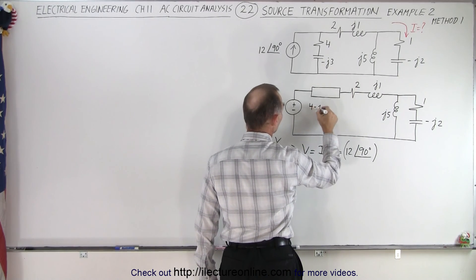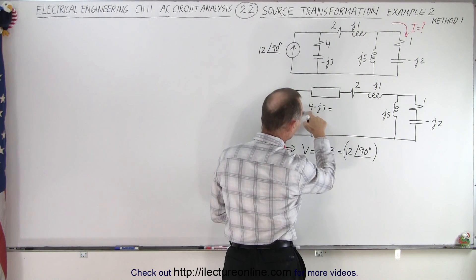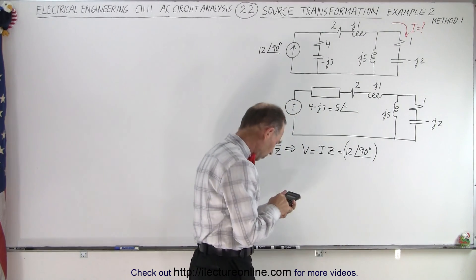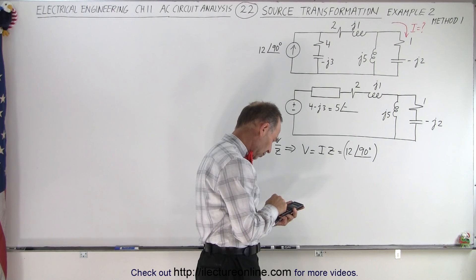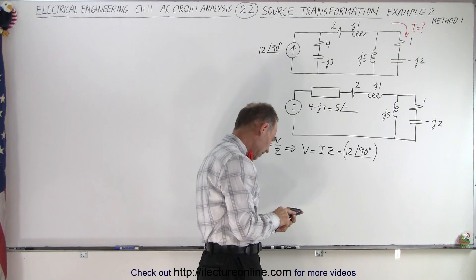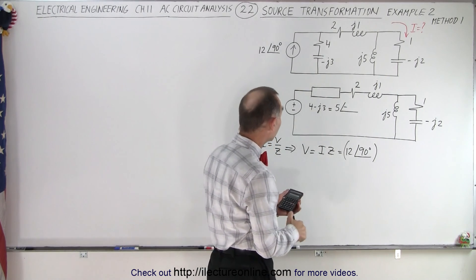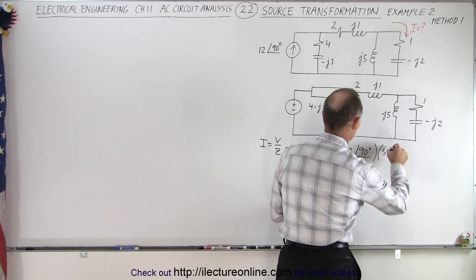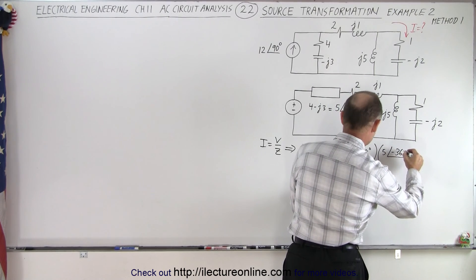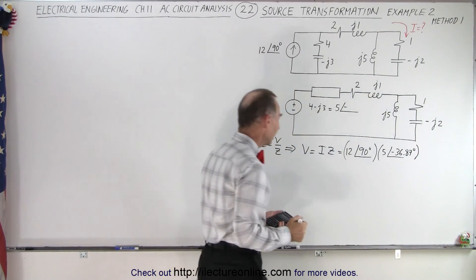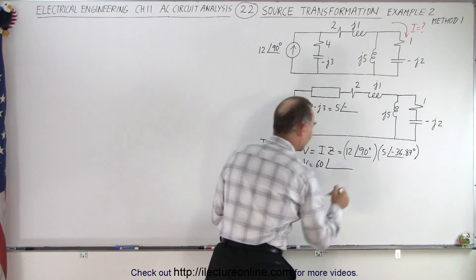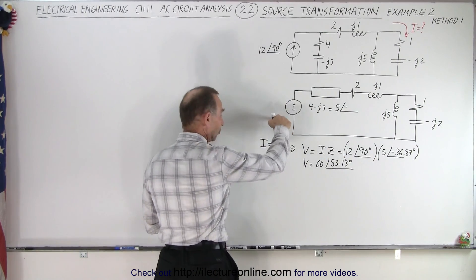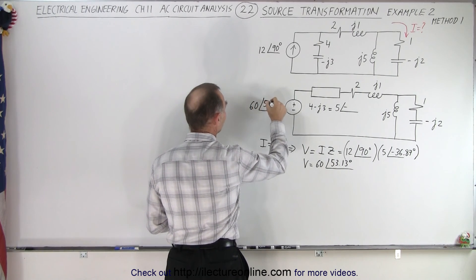Well, 4 minus J3 can be written in polar form. The magnitude is the square root of 16 plus 9, which is 25, so that's 5. The phase angle is found from 3 divided by 4, taking the inverse tangent: 36.87 degrees. So that would be 5 with a phase angle of minus 36.87 degrees. That gives us a voltage equal to 60 with a phase angle of 90 minus 36.87, which is 53.13 degrees. So that becomes a new voltage source: 60 with a phase angle of 53.13 degrees.